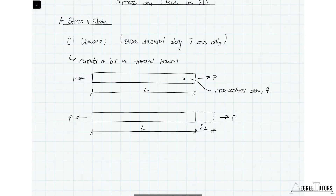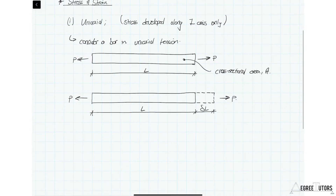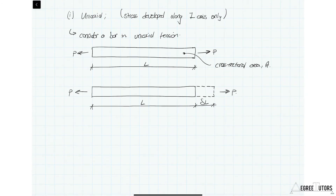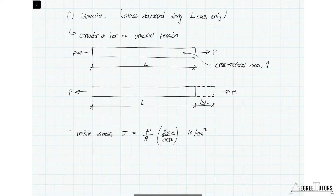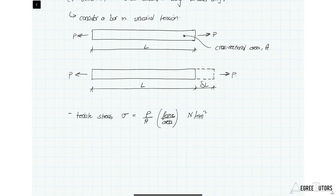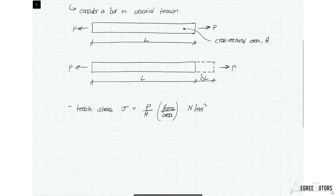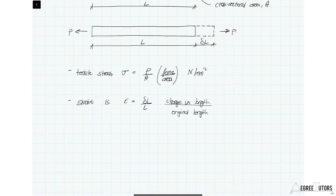Now we'll state the common relationships for stress and strain. The tensile stress developed in the bar, sigma, is equal to P over A — the force over the area — with units like newtons per millimeter squared. The corresponding strain that develops in the bar is the change in length over the original length: epsilon equals delta L divided by L. Strain is unitless because it's a length divided by a length.